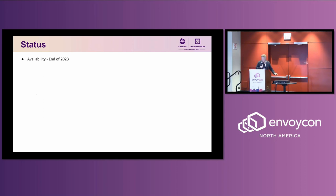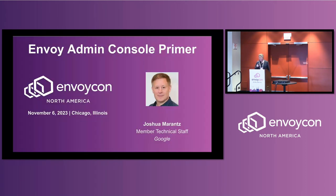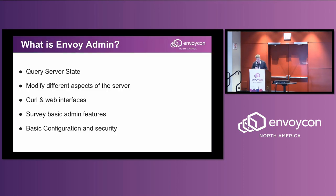We'll do questions for all three talks at the end, if there's time. I'm Josh Marantz. I work as an Envoy maintainer and I'm also managing load balancing in the Envoy platform teams at Google. I'll give a brief rundown of what the admin console is. If you already know it, I have a couple of new things to show you. It's an interface that lets you query the state of the running Envoy server. You can also modify some aspects of the server. It has basic interfaces — you can access it by curl or wget, or there's also a web interface.